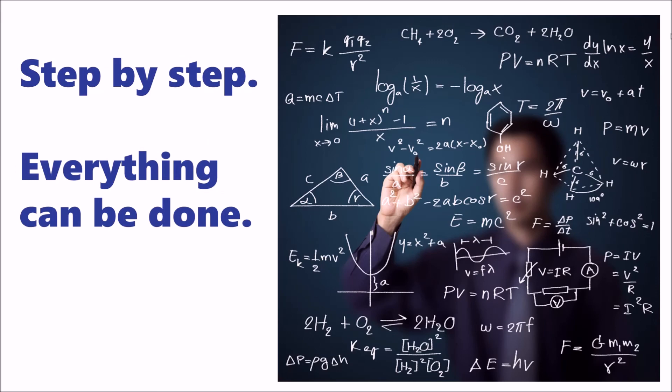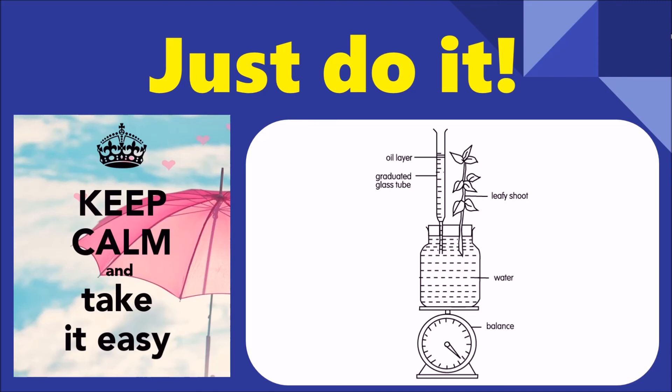I made this video because in our final term exam some students said the calculation in biology is so difficult. So I wanted to show you step by step that we are only using subtraction and division — A minus B, then divided by C. The key skill is being able to identify which figures to use for each question.